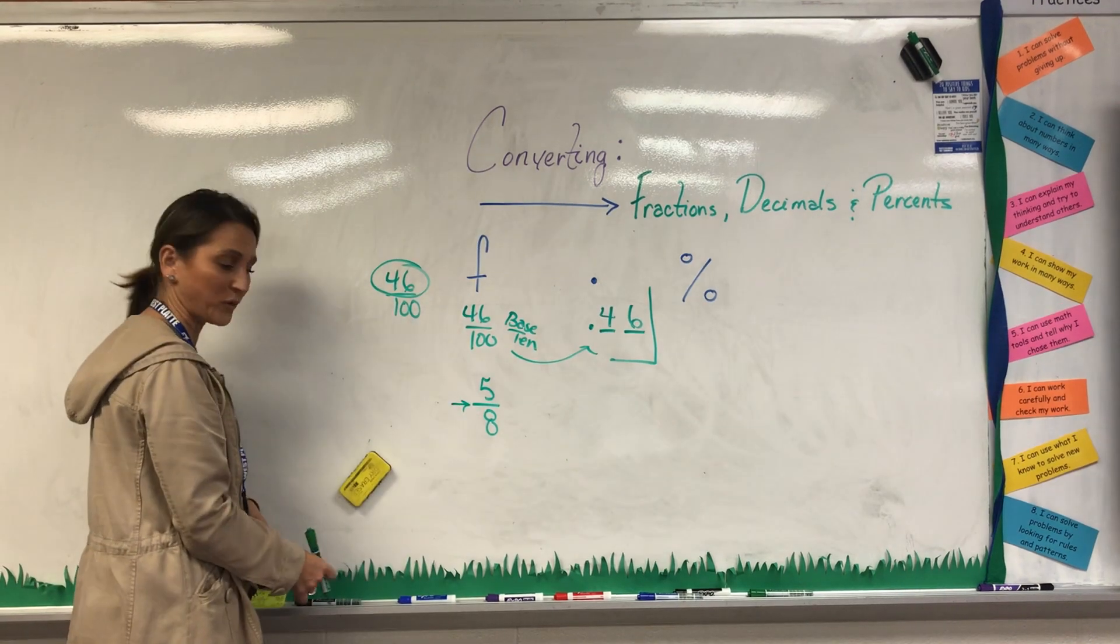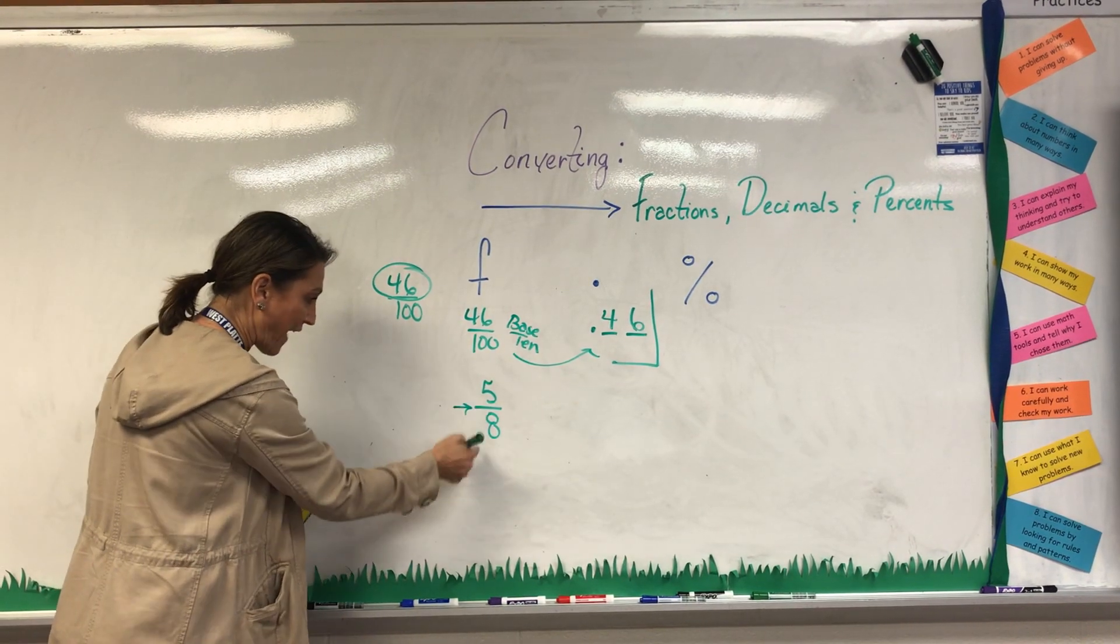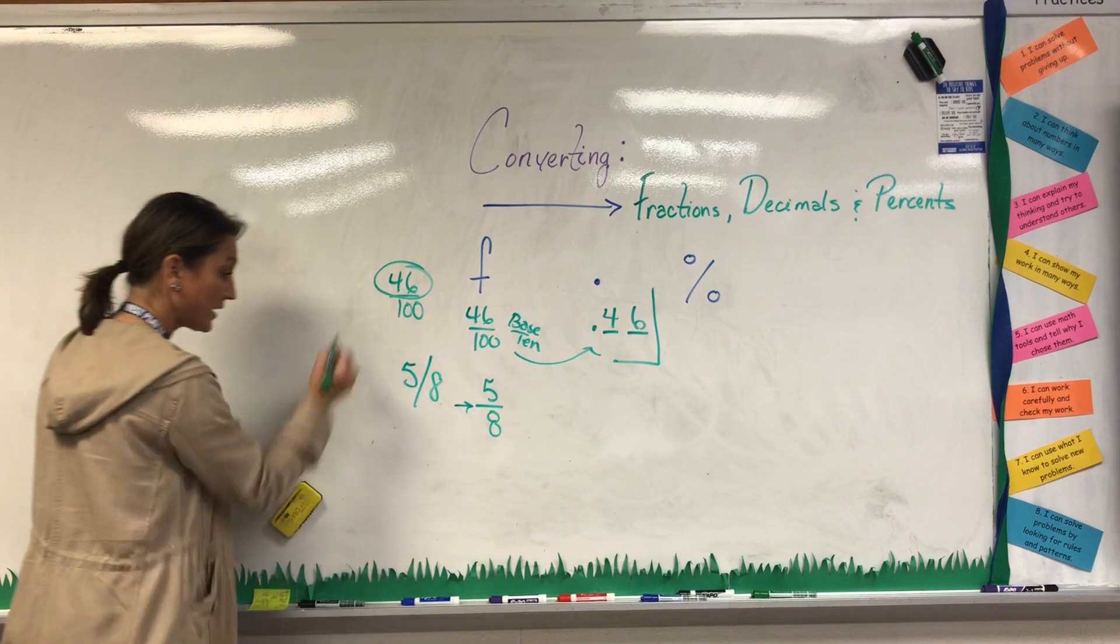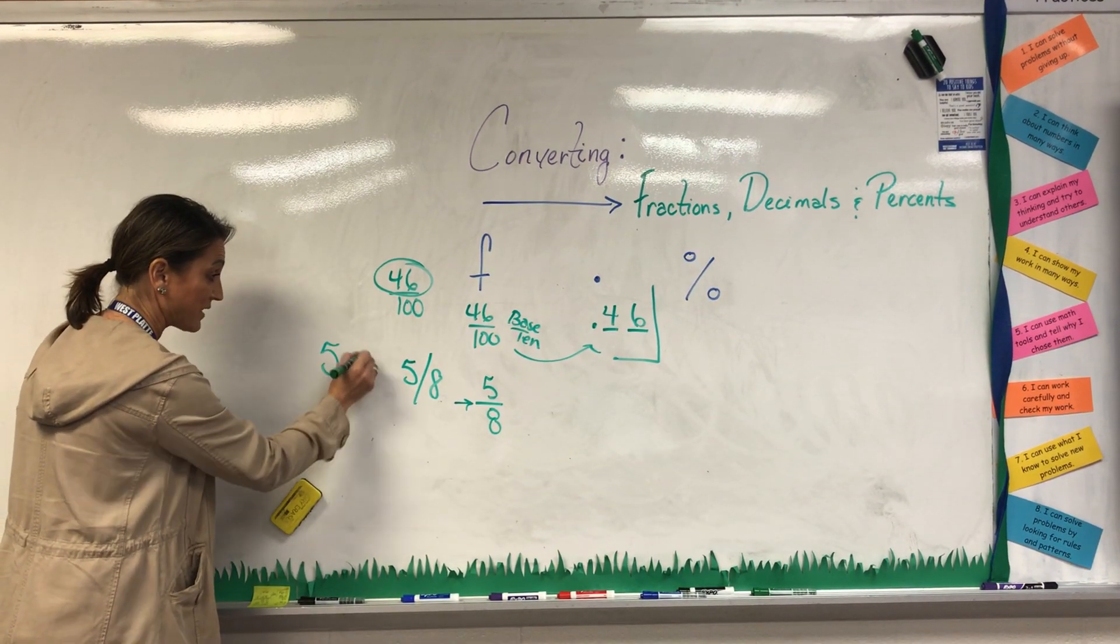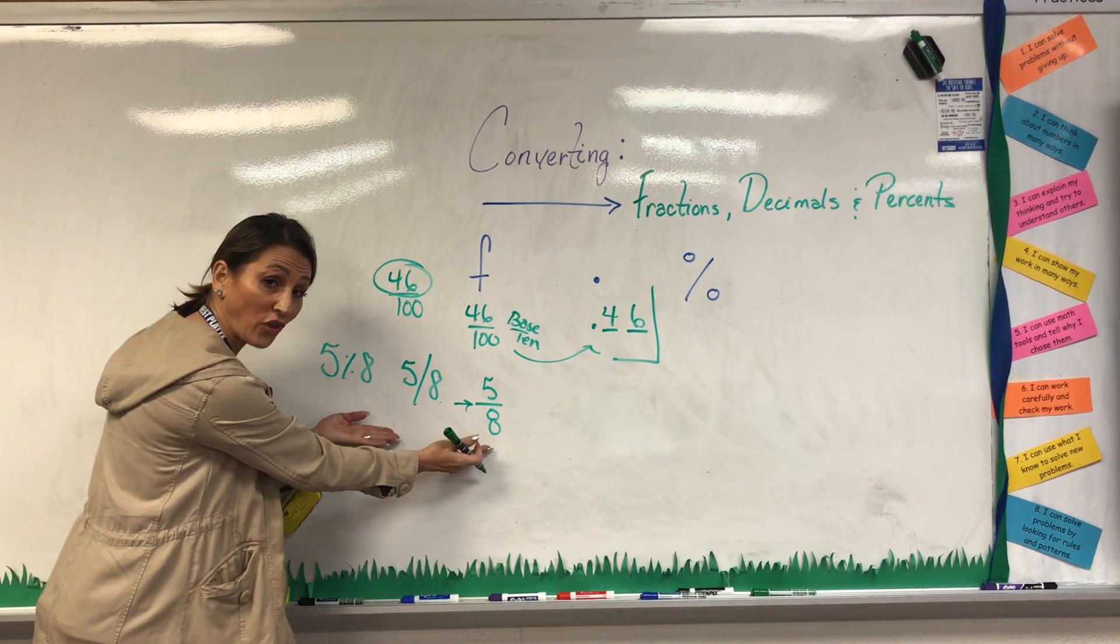That's what that lovely line stands for and I showed your students today. 5 eighths is the same as 5 over 8, which is the same as 5 divided by 8. Those are all the same notation.